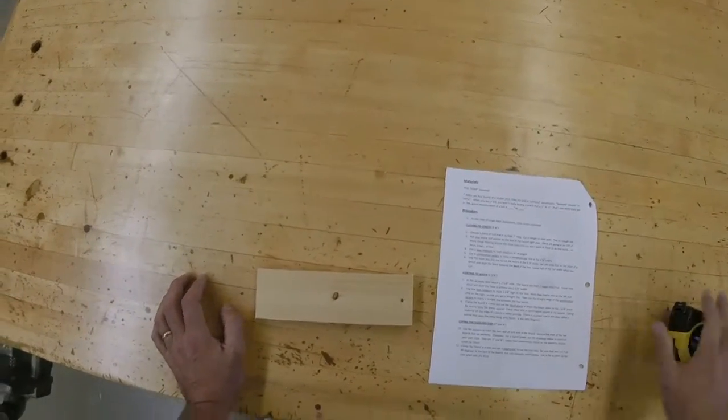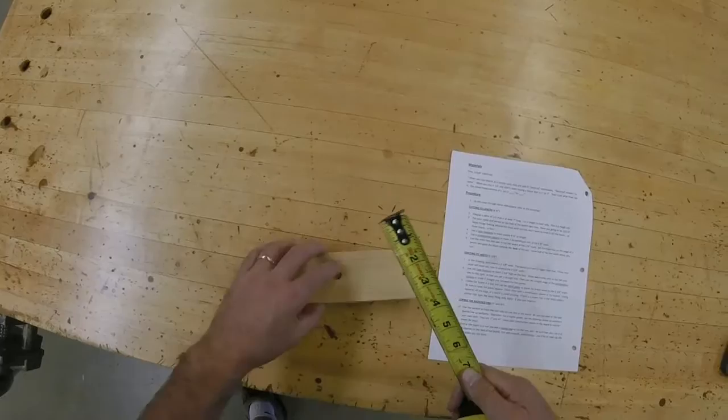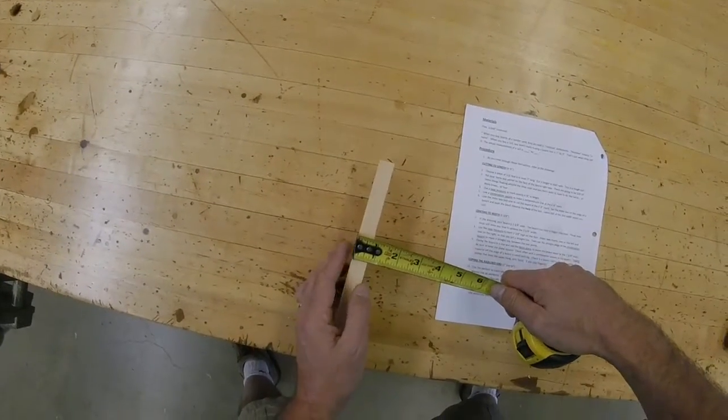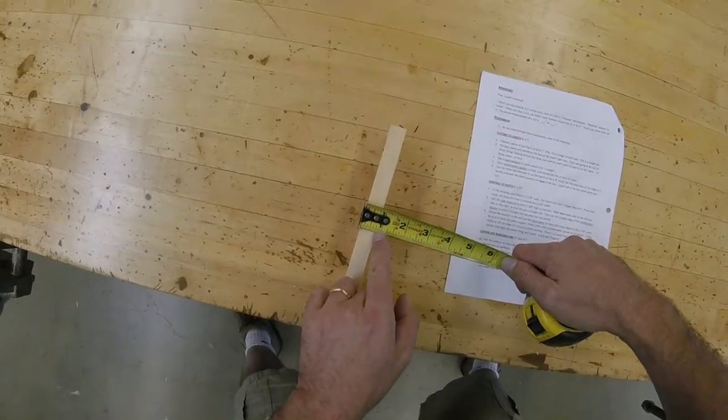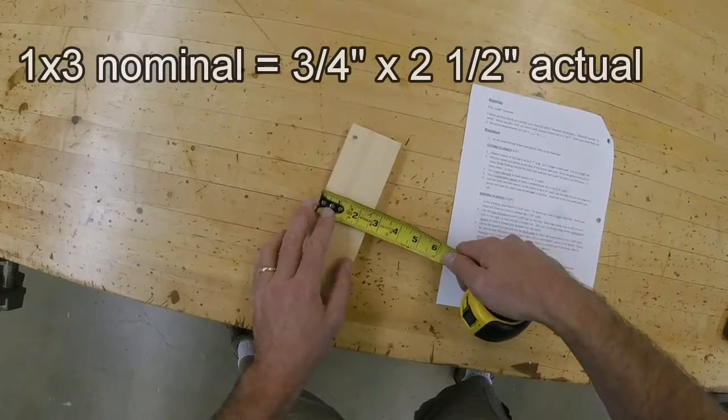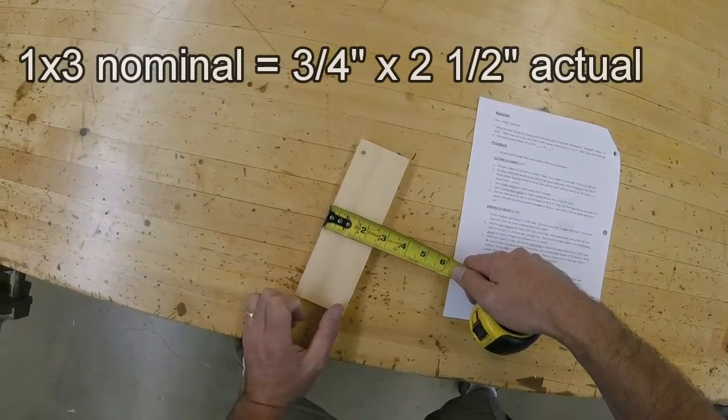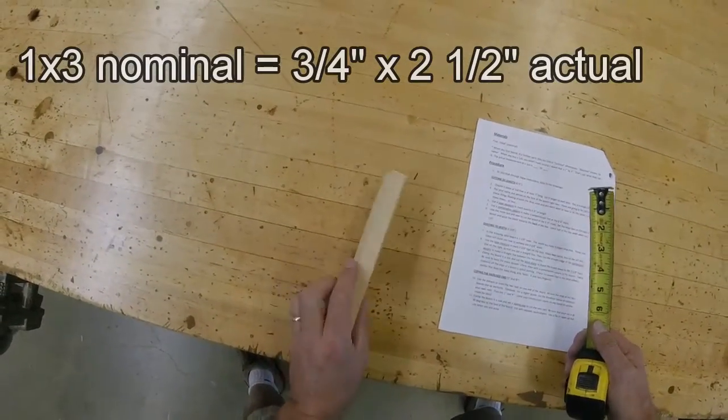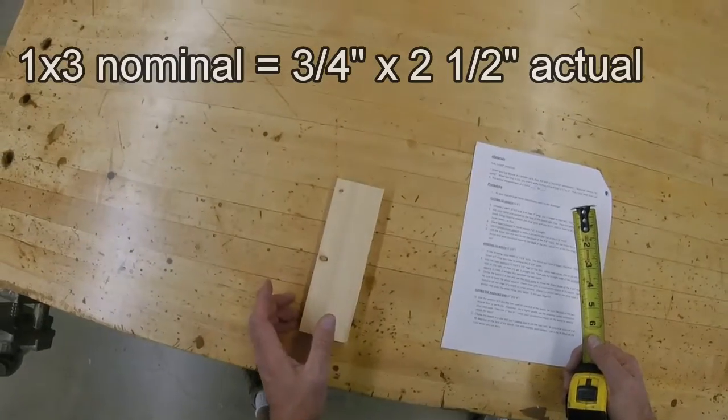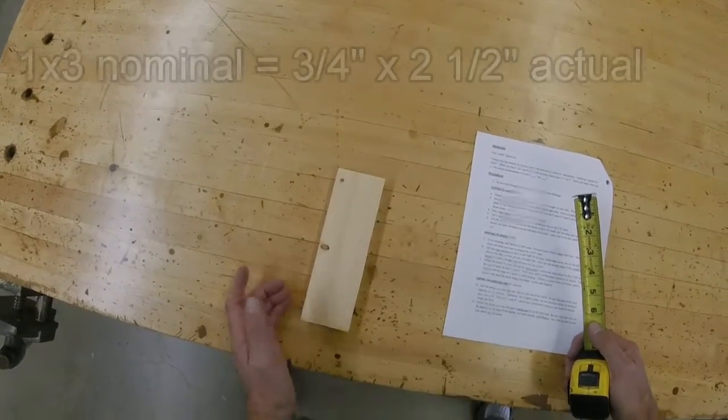The actual measurement of a 1x3 is three-quarters of an inch by two and a half inches. So even though this isn't really 1 inch by 3 inches, we call it a 1x3. That's the nominal dimensions.